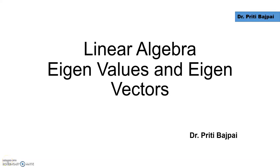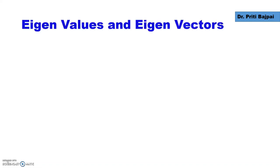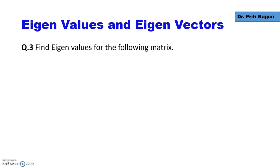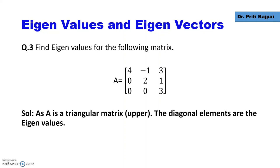In this video we'll see how we find eigenvalues and eigenvectors for a diagonal matrix. We also call diagonal matrices as triangular matrices. Triangular matrices are matrices where all the values above the diagonal are zero, or values below the diagonal are zero.